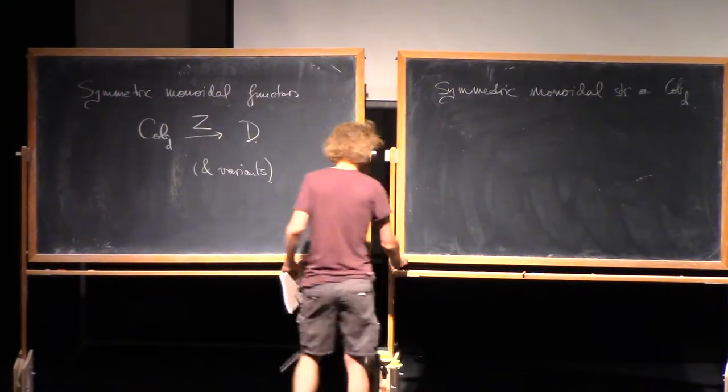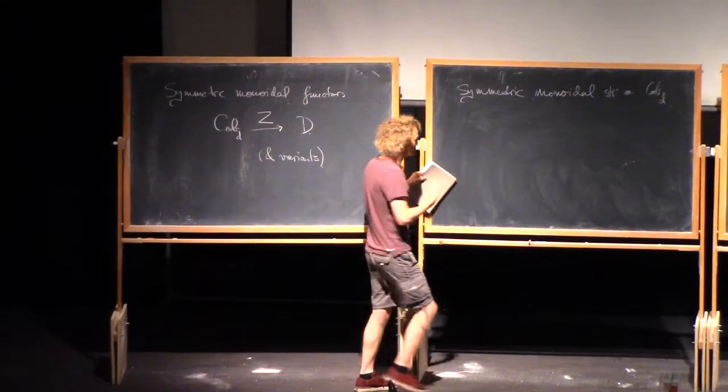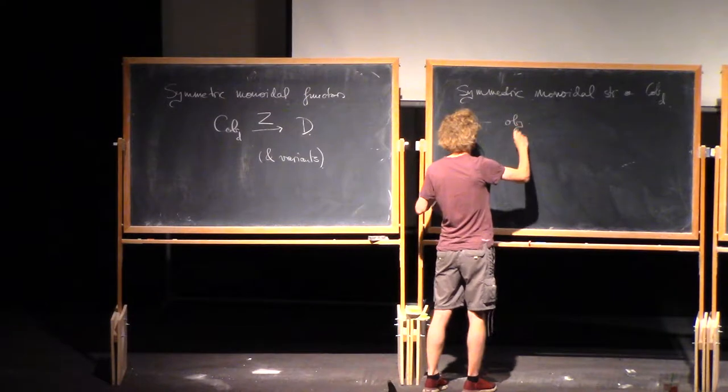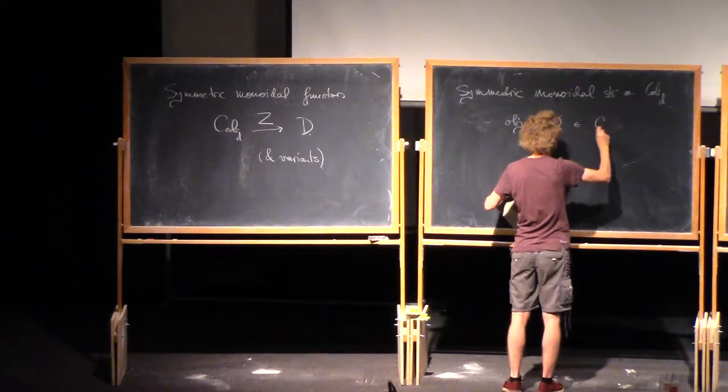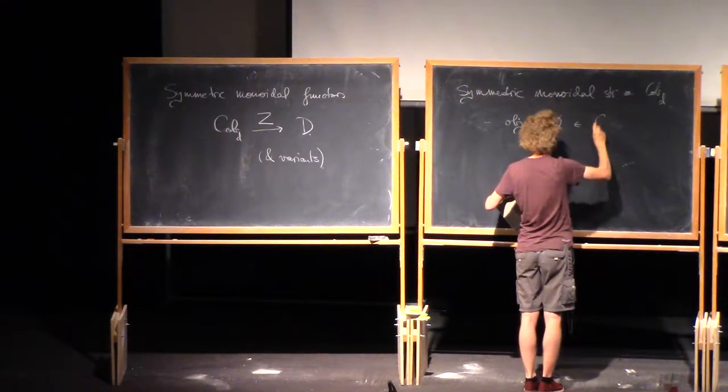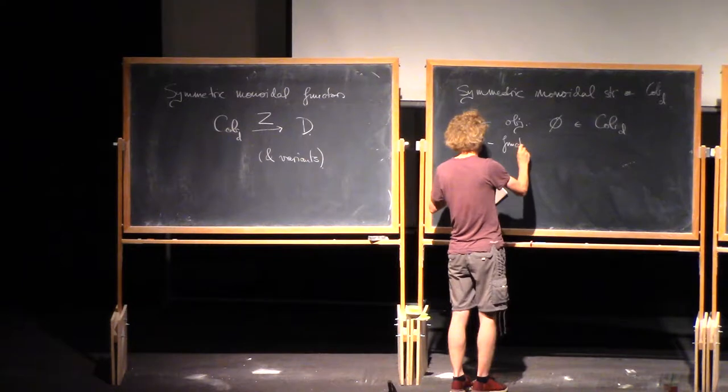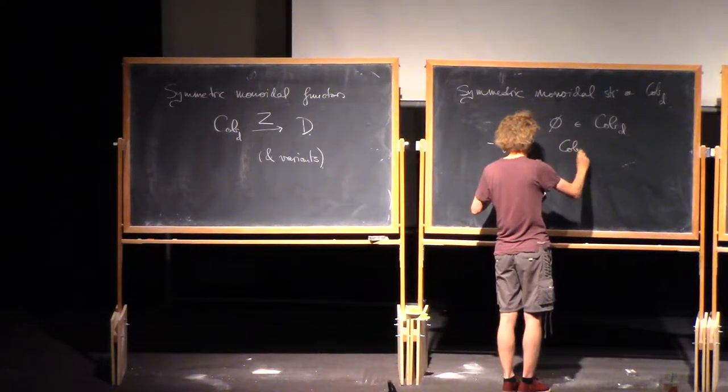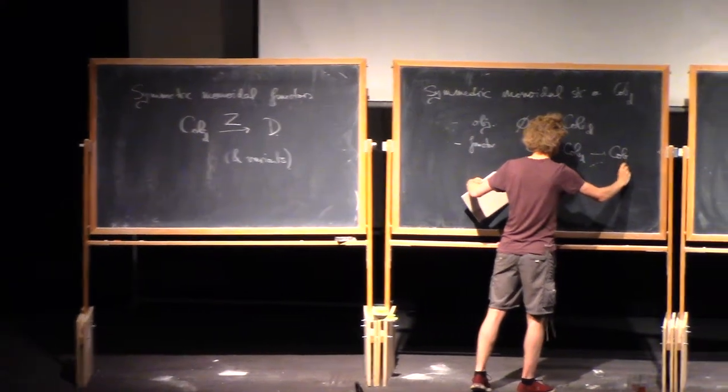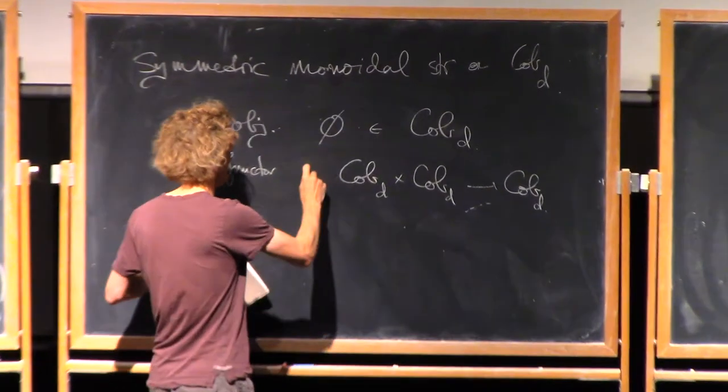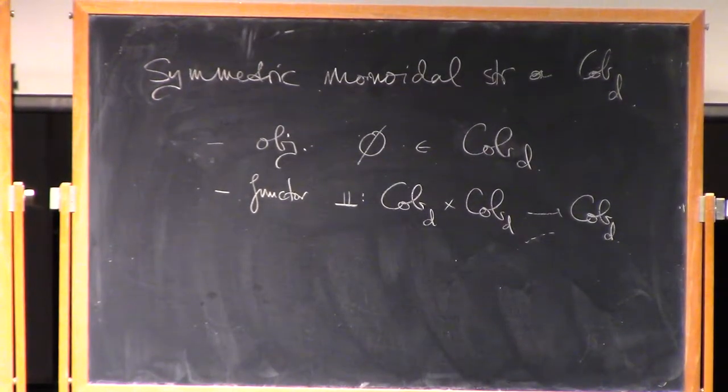Symmetric monoidal structure on Cob_D. Symmetric monoidal unfortunately sounds like an adjective, as if it's a property or something. But the symmetric monoidal structure is extra structure. It consists of an object, which in this case is the empty D minus 1 manifold in Cob_D. Then it consists of a functor from the category cross itself back to the category. In this case, it's disjoint union of closed D minus 1 manifolds and disjoint union of D-dimensional cobordisms between them.